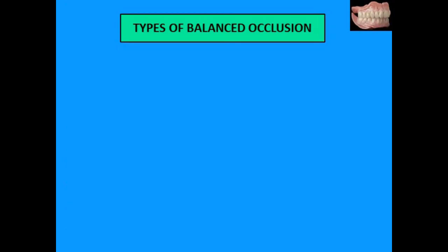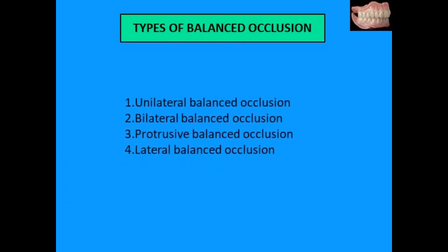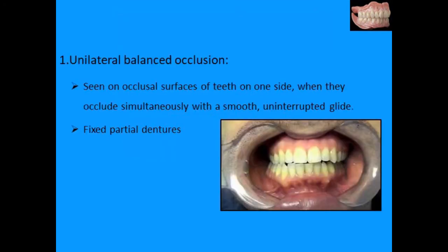Beginning with the types of balanced occlusion. There are unilateral balanced occlusion and bilateral balanced occlusion, which can be protrusive and lateral balanced occlusion. The first one is unilateral balanced occlusion, which is the occlusion seen on the occlusal surfaces of teeth on one side when they occlude simultaneously with a smooth uninterrupted contact. This is not followed during complete denture construction and is more pertained to FPDs.